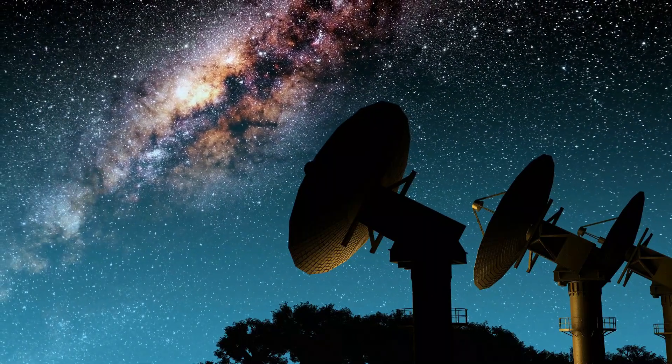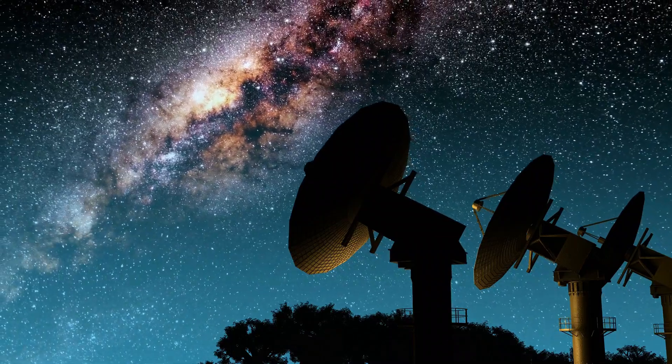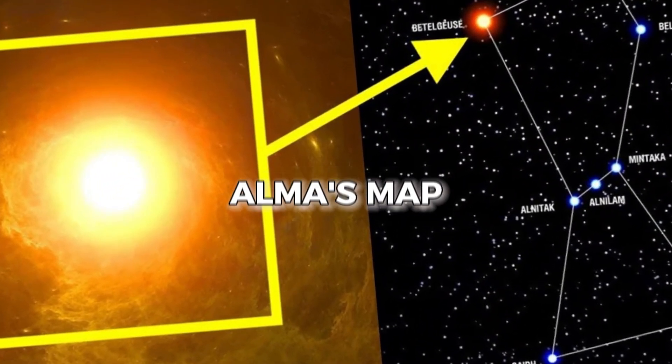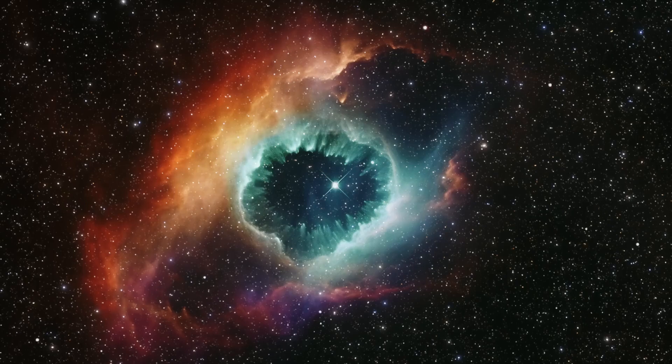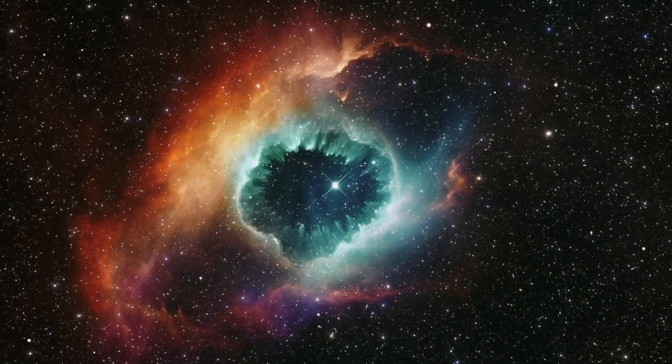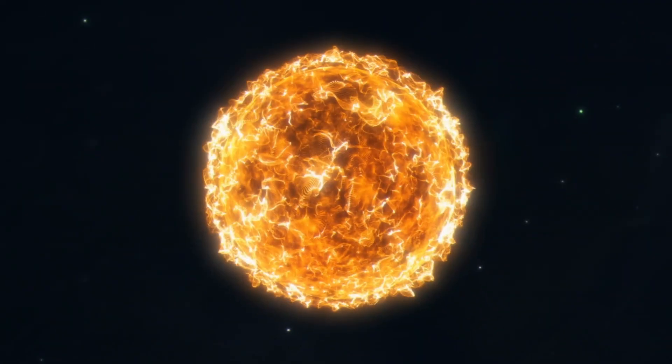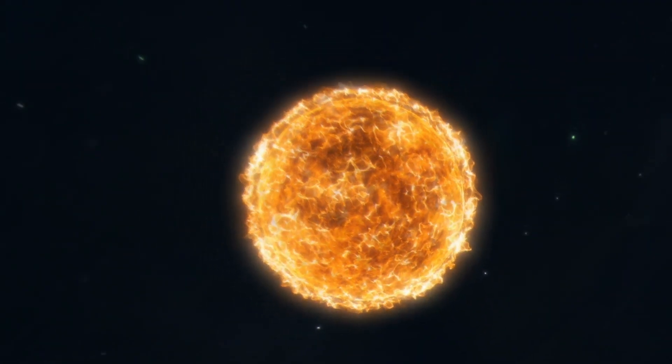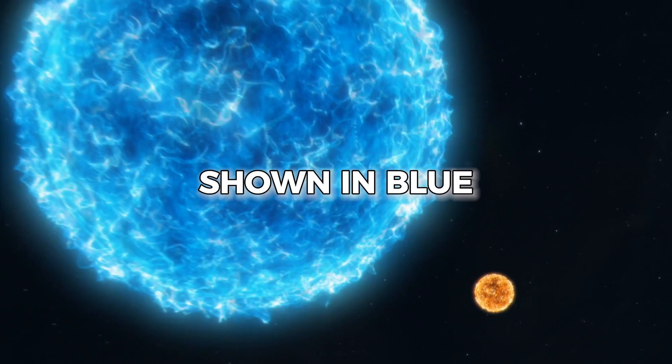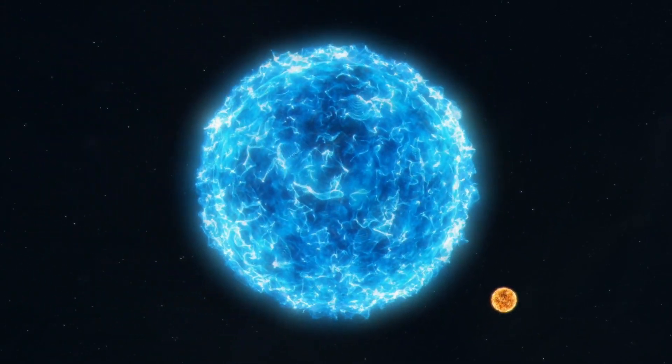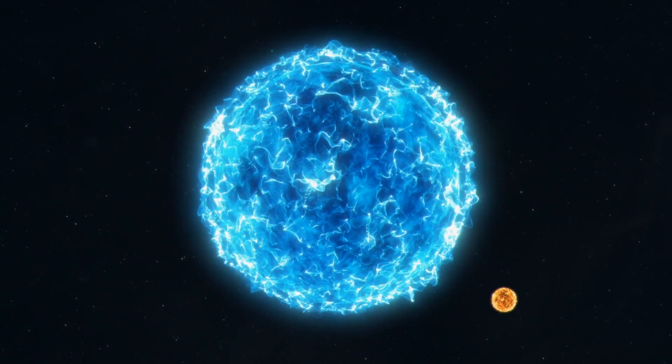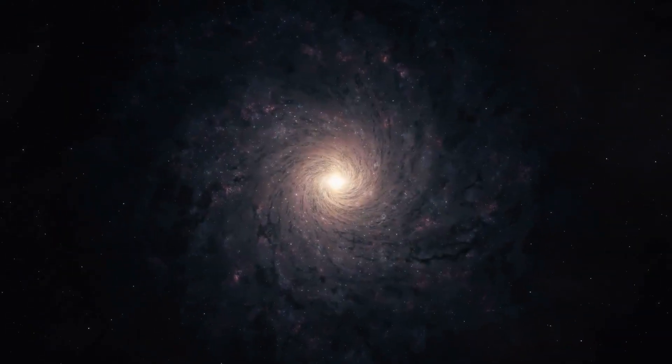The first clue that something funky was happening with Betelgeuse came from ALMA's map showing how fast its surface was moving. Think of it like a fancy speedometer for stars, showing if they're coming closer or zipping away. Half of Betelgeuse seemed to be rushing towards us, shown in blue, while the other half seemed to be jetting off, shown in red. This colorful map helped scientists figure out that Betelgeuse was spinning like a top.